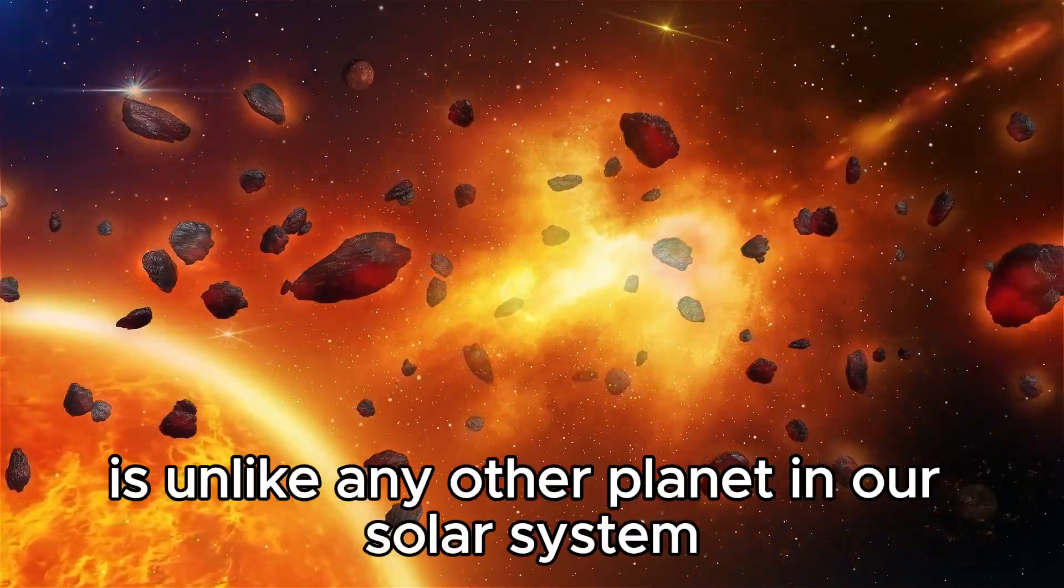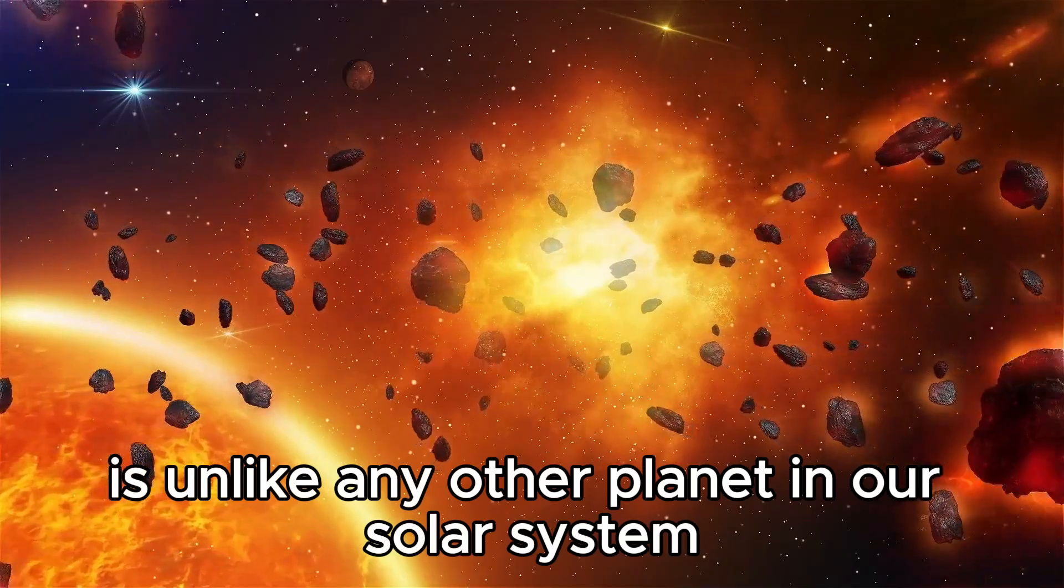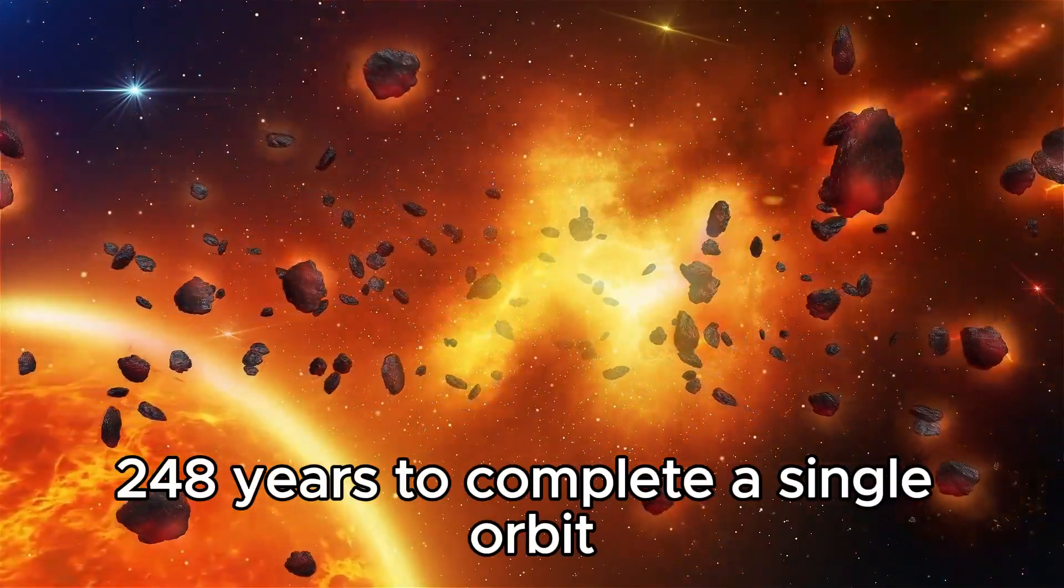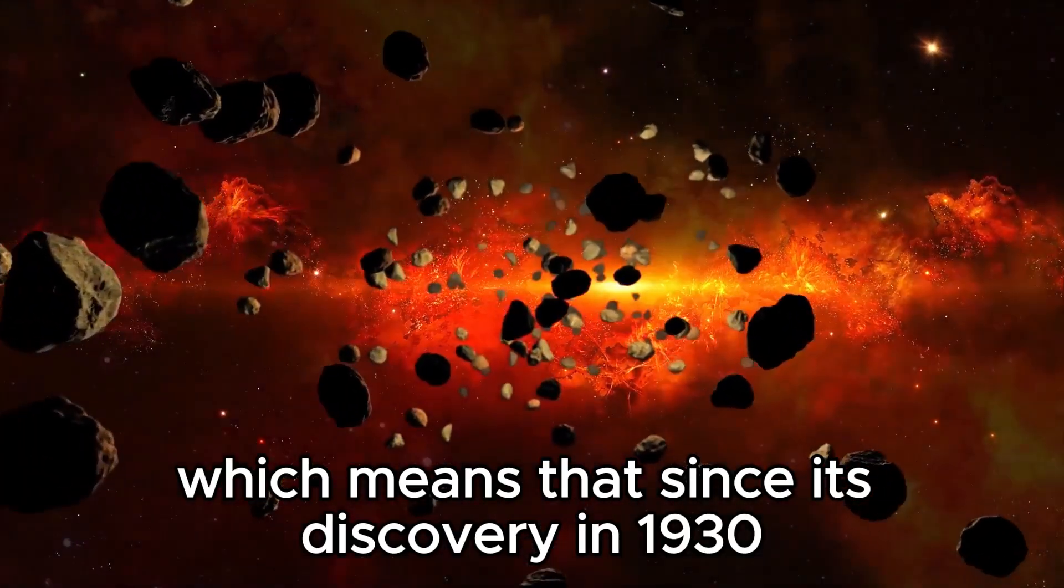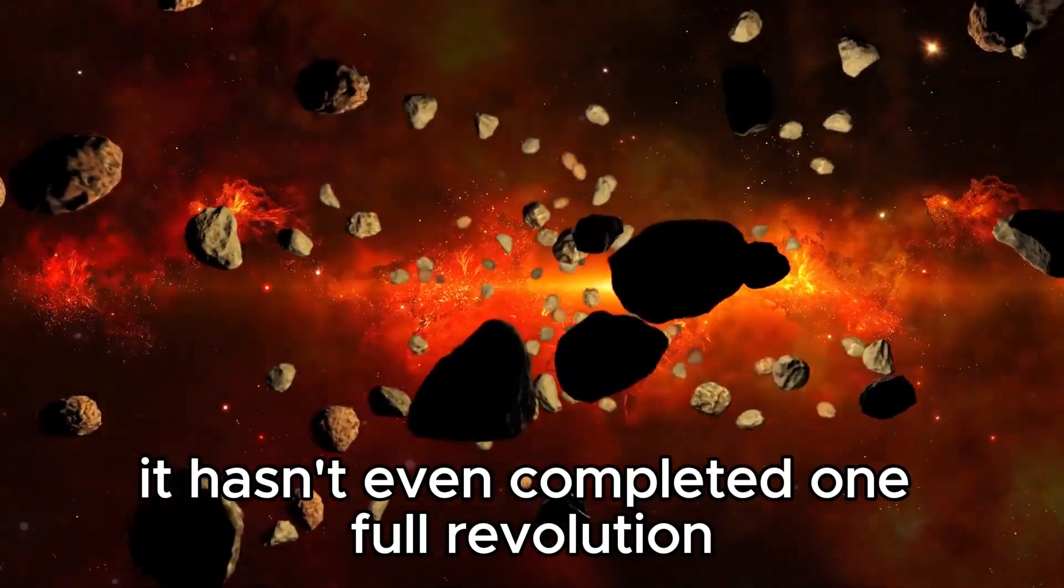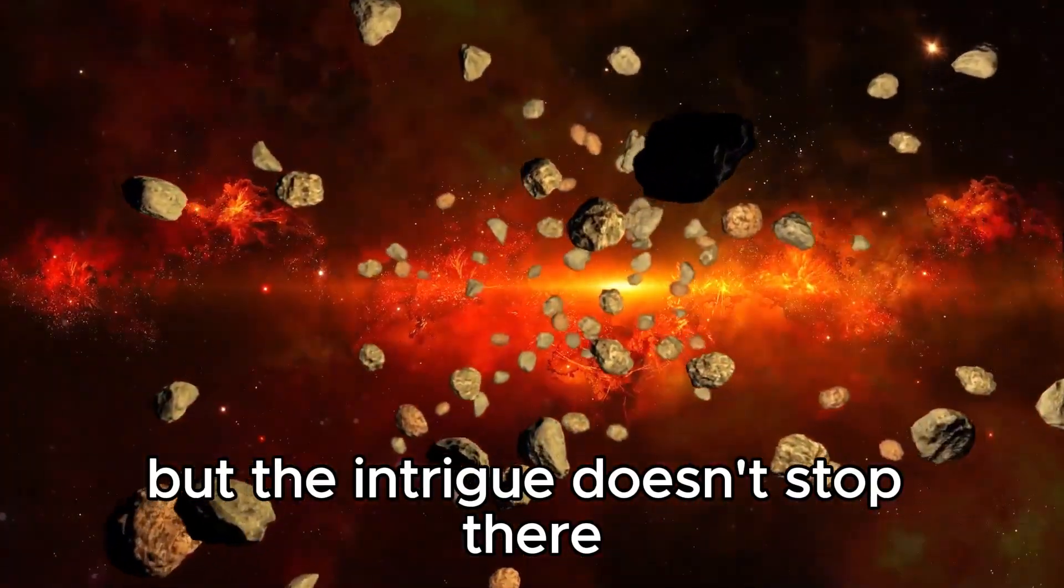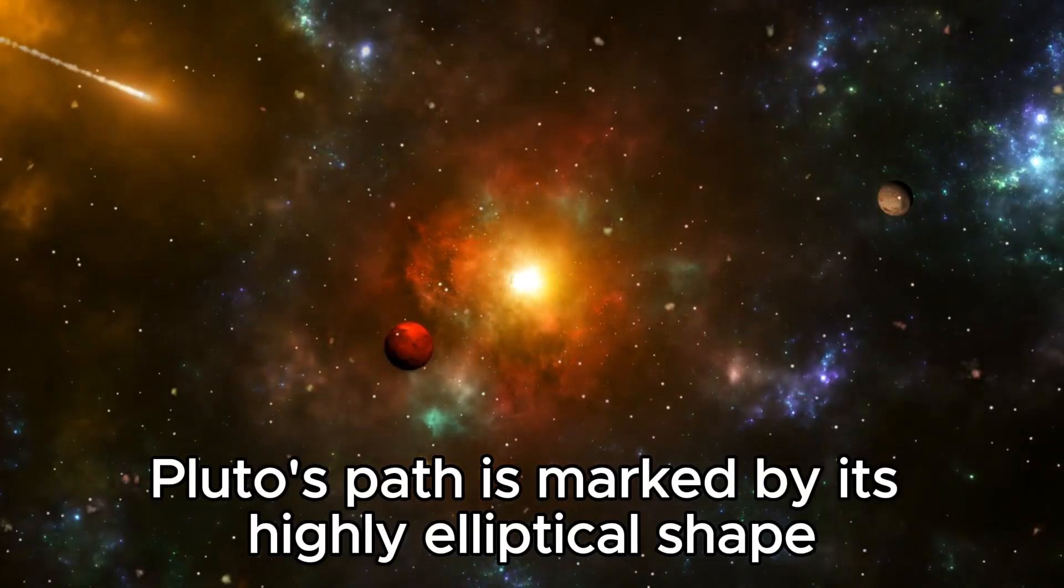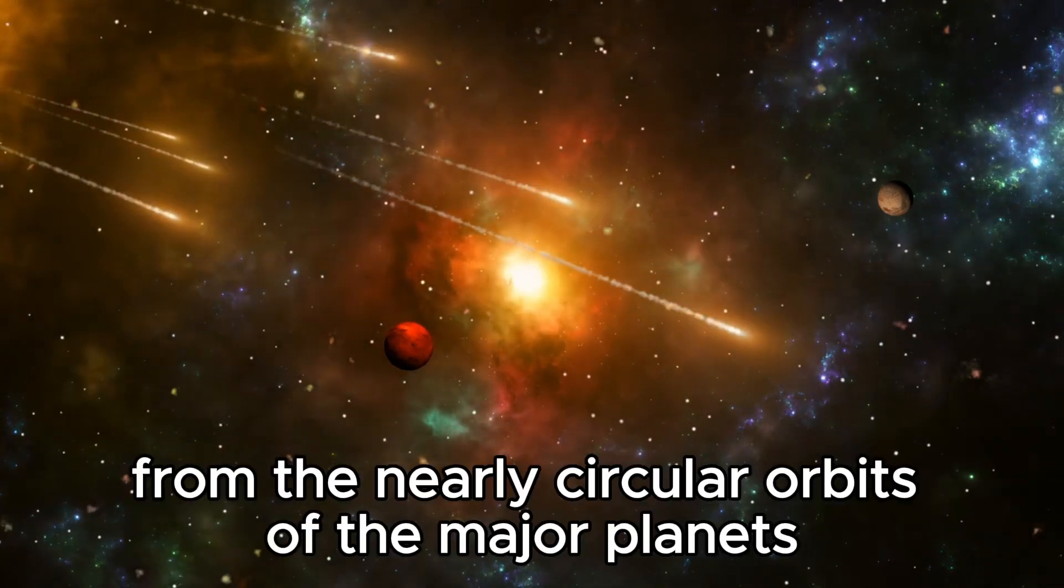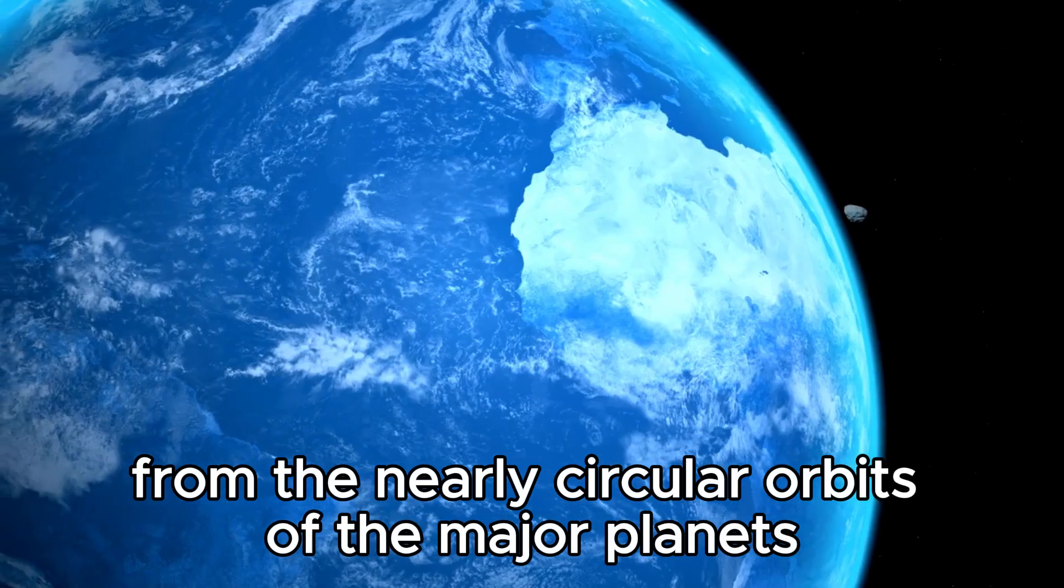Pluto's journey around the Sun is unlike any other planet in our solar system. It takes a whopping 248 years to complete a single orbit, which means that since its discovery in 1930, it hasn't even completed one full revolution. But the intrigue doesn't stop there. Pluto's path is marked by its highly elliptical shape, deviating significantly from the nearly circular orbits of the major planets.